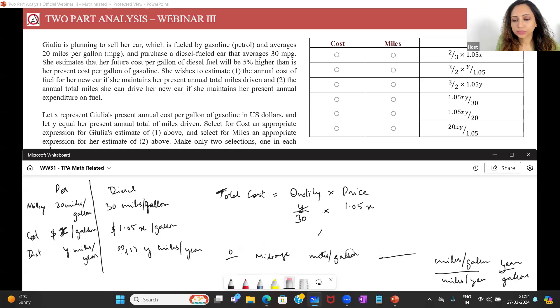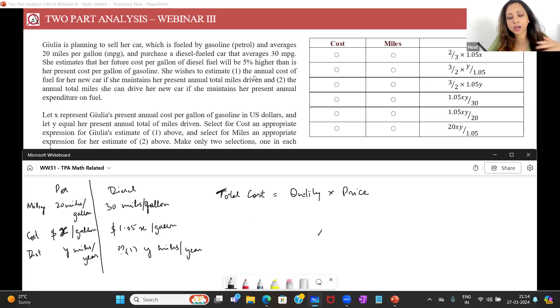Let's look at what 2 is now. I'll just remove all this, make some space. I'll keep this relation. Two: the annual total miles she can drive her new car if she maintains a present annual expenditure on fuel. Now I don't know what her current annual expenditure on fuel is but I can find it, just like I found for one. I found the current annual cost of fuel for her new car, for the diesel car. Now her current expenditure, for the petrol car, what is the total annual expenditure? I can easily find.